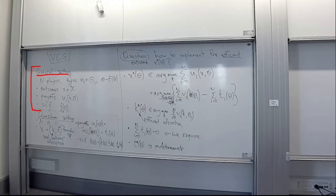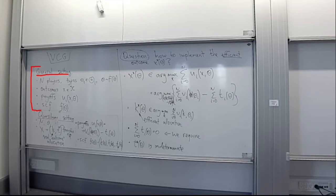The question that we considered last week was: is f of theta implementable in dominant strategies? We considered one simple answer — you only need to look at the direct revelation mechanism to find out whether f of theta is implementable or not. If the direct revelation mechanism implements f of theta then you have your mechanism. If it does not, then no other mechanism will. This was our main takeaway from last week.